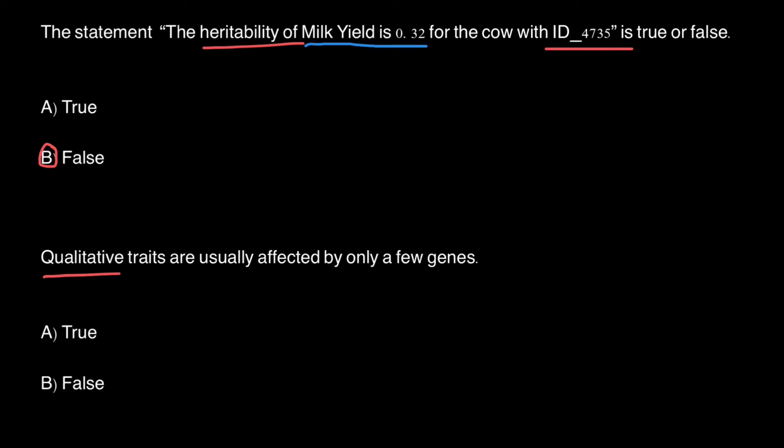So we can say that qualitative traits are usually affected by only a few genes — and this is true. Quantitative traits, on the other hand, are under the control of many genes.